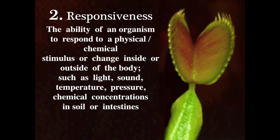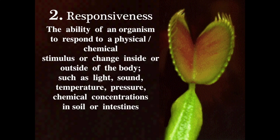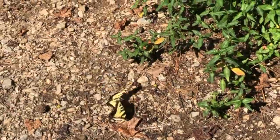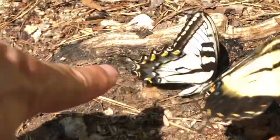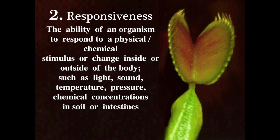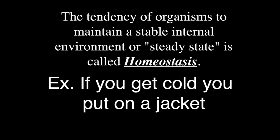The second characteristic of life is responsiveness. Responsiveness could also be described as movement. A living organism is going to respond to a physical stimulus such as touch, or maybe some sort of stimulus outside or inside of the body — maybe a light or sound. If someone's poking you, you're going to respond and move away from it. An example of one type of responsiveness is homeostasis.